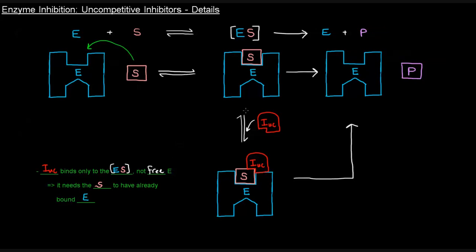Competitive inhibitors bind the free enzyme, and non-competitive inhibitors can bind the free enzyme or the enzyme-substrate complex. But uncompetitive inhibitors require the substrate to have bound the enzyme first. Once the enzyme-substrate complex forms, the uncompetitive inhibitor can come in and bind. I've drawn it with a little indentation so you can imagine the substrate needs to bind first, and then the uncompetitive inhibitor fits in with the enzyme and substrate.